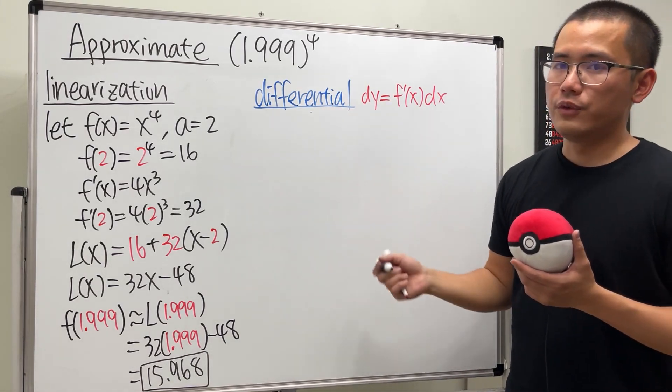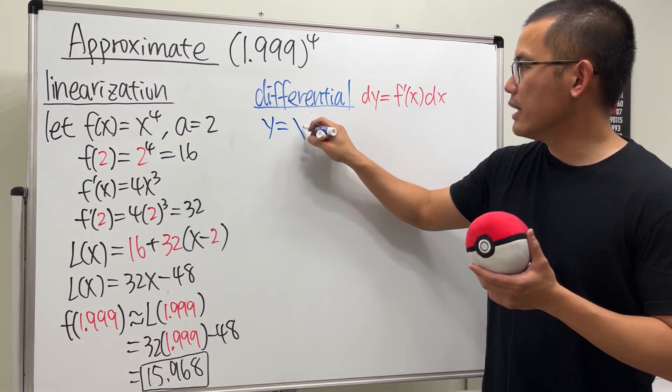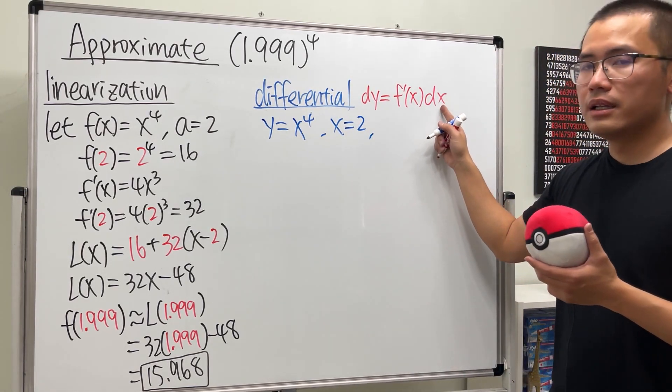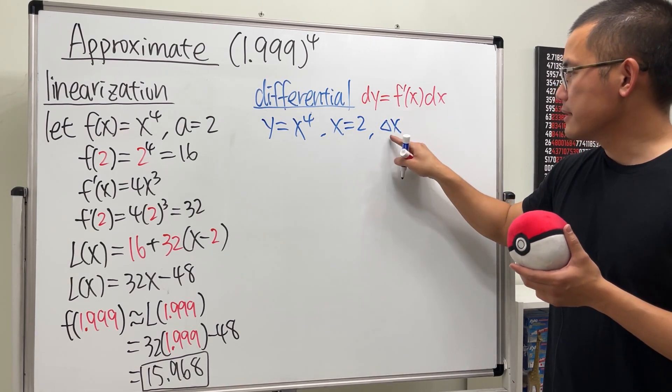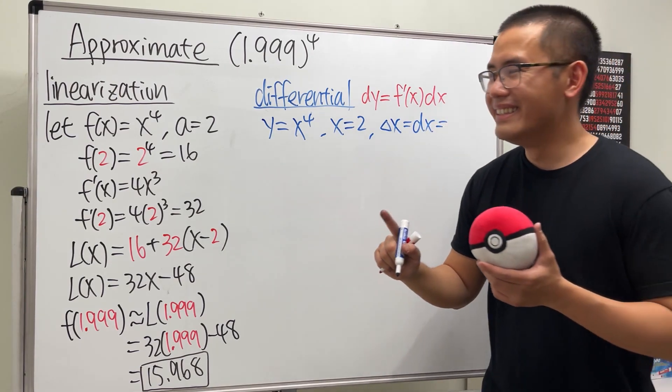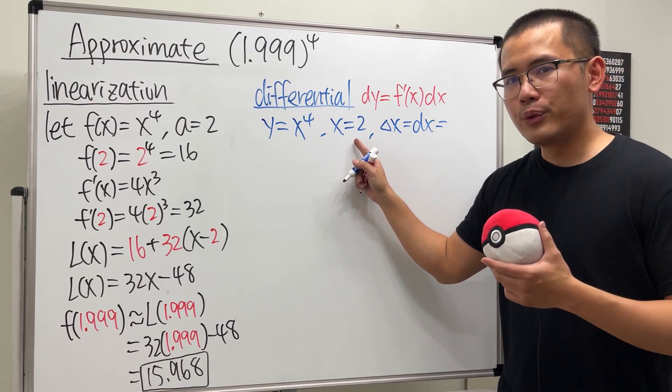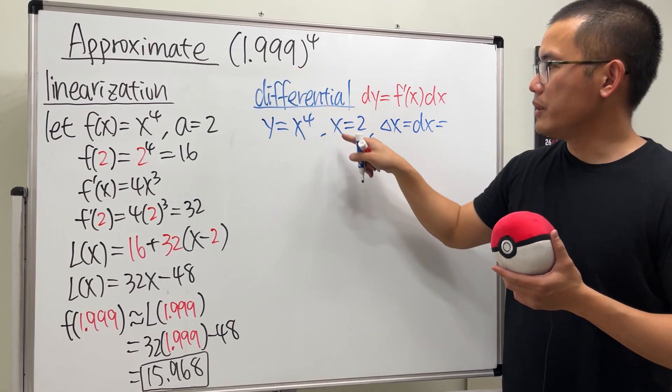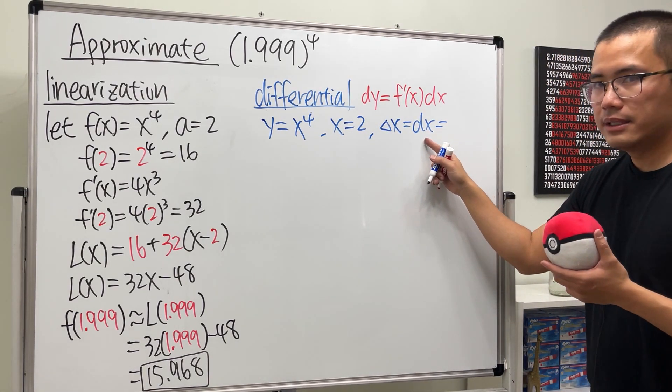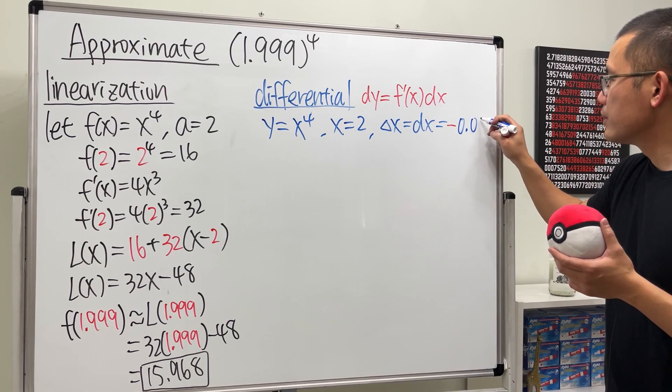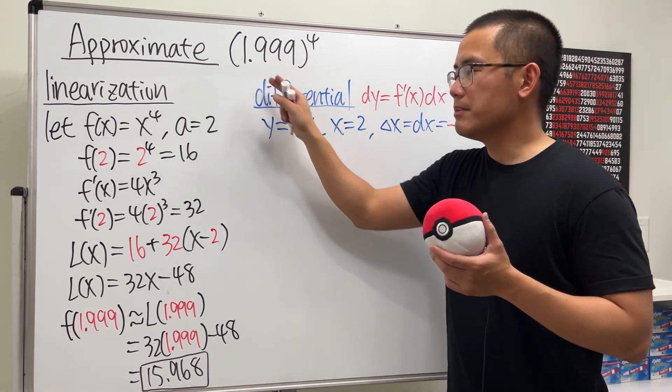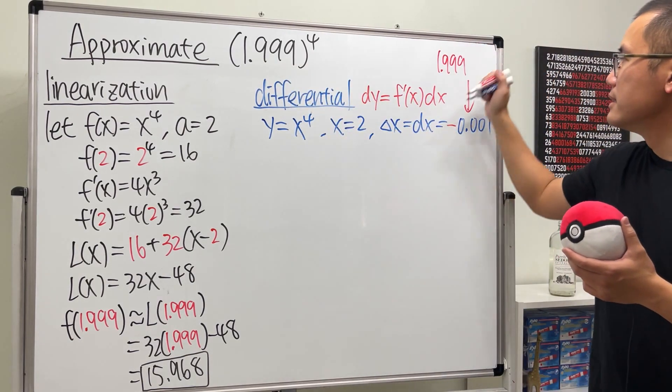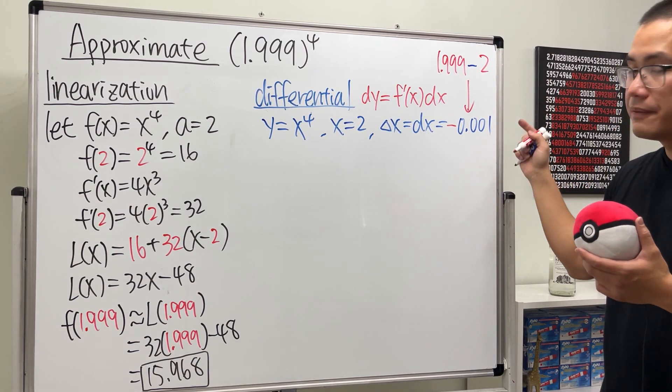This is how you go about it if you want to use the differential approach. First, we say y is the function, which is x^4. The x value is what we had earlier—the a value, which is 2. Then we have to talk about dx, which is the change in x. The exact change in x is the same as dx because this is the original x value—the x value that we know much better with the function. This is the x value that we want. Be really careful: from here to here, the Δx or dx is -0.001. You always do the one that you want minus the one that you know. This is because we do 1.999 minus the one that we know, minus 2. That's how we get the negative.